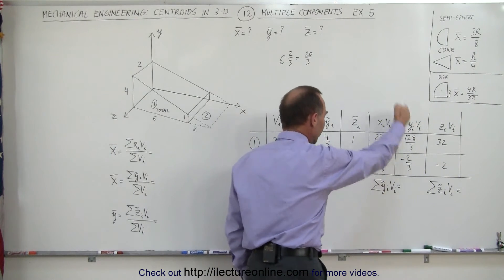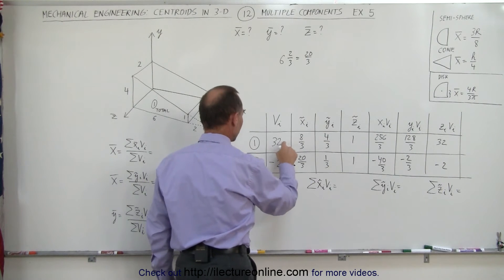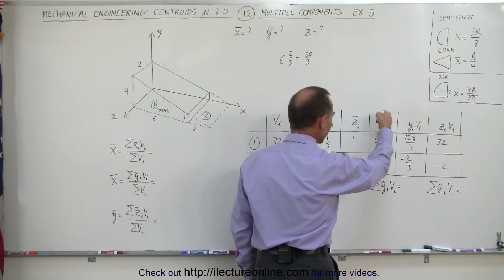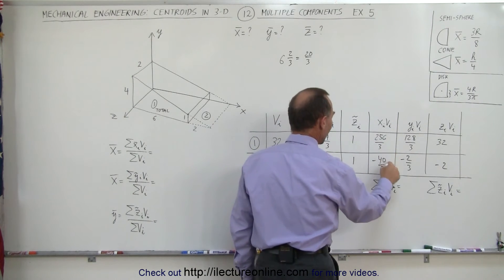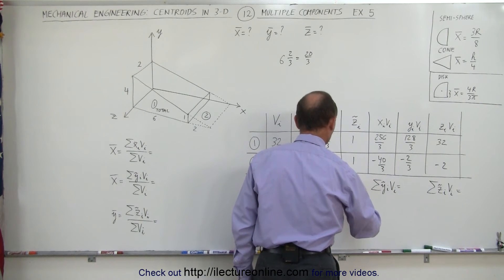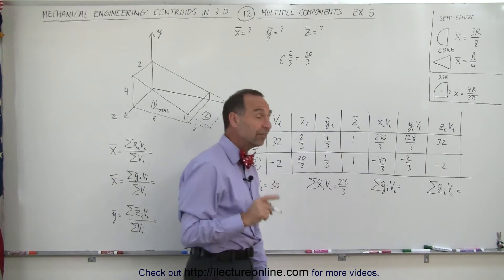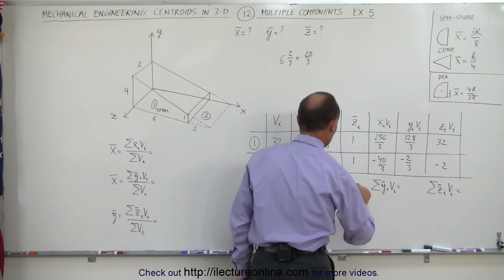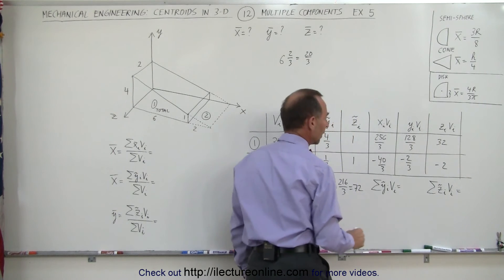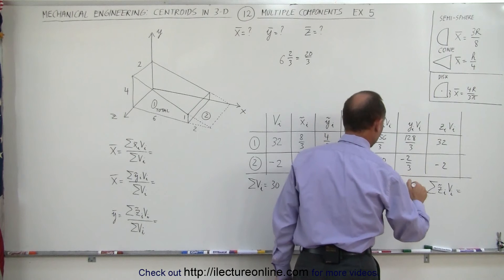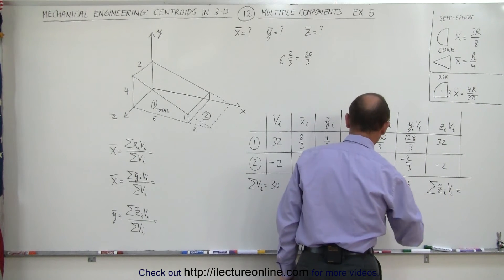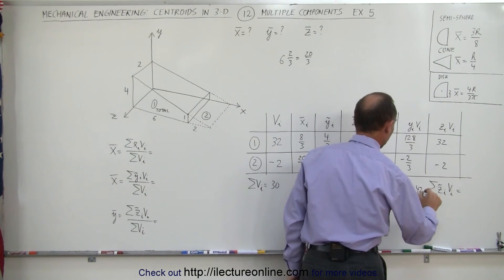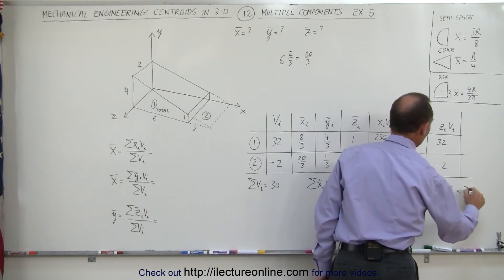Now we're going to go ahead and add these together. For the volumes, thirty-two minus two is thirty — that's the net volume. For the x sum, two-fifty-six thirds minus forty-thirds is two-sixteen thirds. It turns out that two-sixteen is divisible by three — three goes into two-sixteen seventy-two times — so this is equal to seventy-two. When we add the y terms together, we get one-twenty-six divided by three. One-twenty-six is also divisible by three — that would be forty-two. And finally, thirty-two minus two is thirty for the z sum.